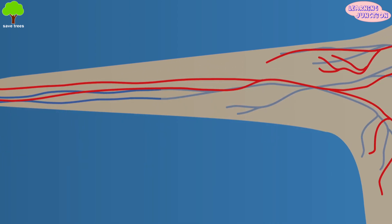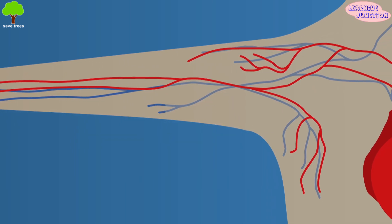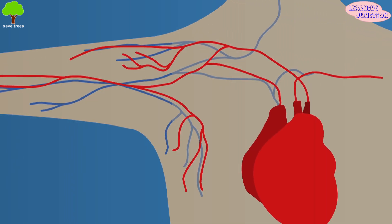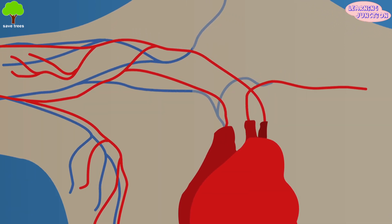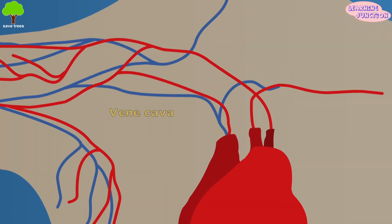The blood capillaries get mixed and form thicker blood vessels called the veins that carry oxygen-depleted blood towards the heart. These blood vessels are called vena cava.